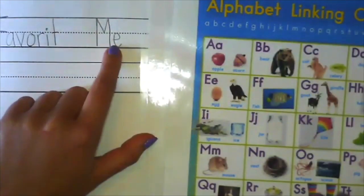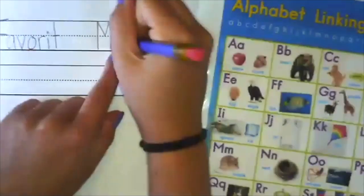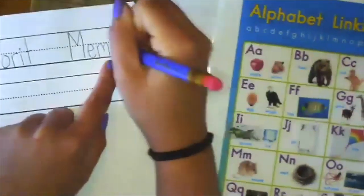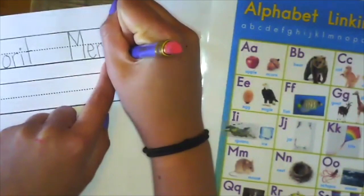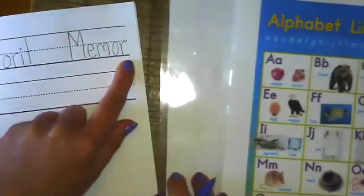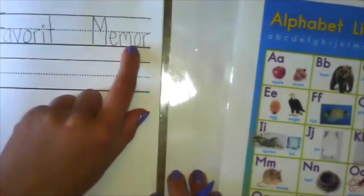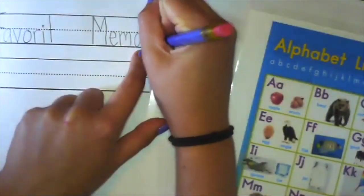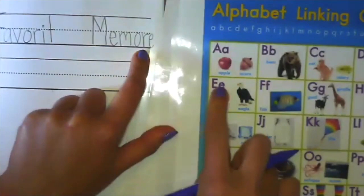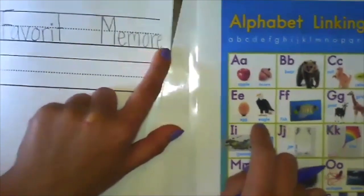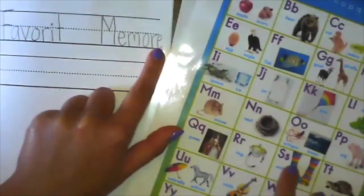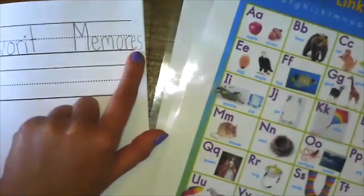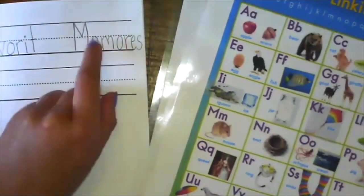Memories, oh another M, mouse. MEM-OR, O-R spells OR, OR, OR, OR. Memories, I hear long E, E-E-E eagle. Memories, S, socks, S makes it plural. S means more than one, not just one memory but memories. More than one memory, like we learned in phonics a few weeks ago.